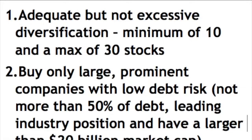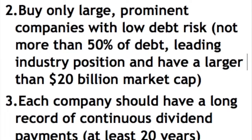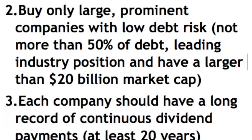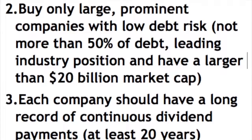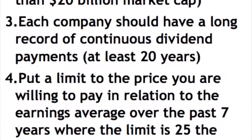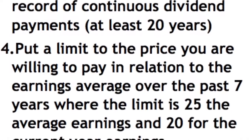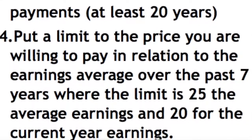Graham gives four rules that, if followed, should leave us with no fear when investing in stocks over the long term. First, adequate but not excessive diversification — minimum 10 stocks, maximum 30. Second, buy only large prominent companies with low debt, not more than 50% of their industry position, with a market cap larger than $20 billion. Third, each company should have at least 20 years of continuous dividend payments. Fourth, limit the price you pay — a maximum P/E of 25 on average earnings over seven years, and 20 on current earnings.